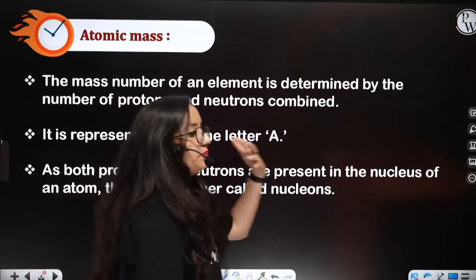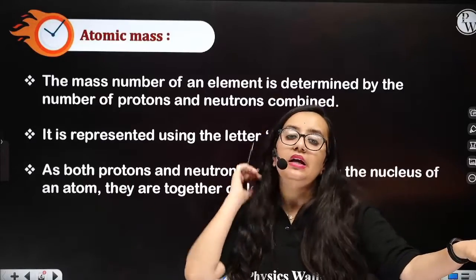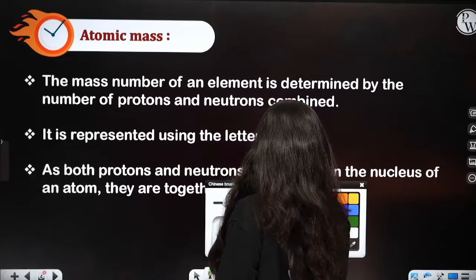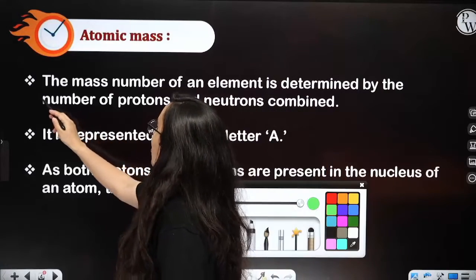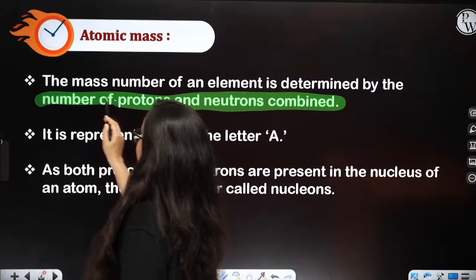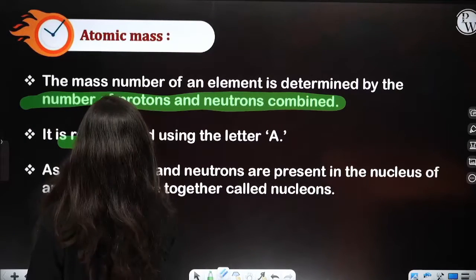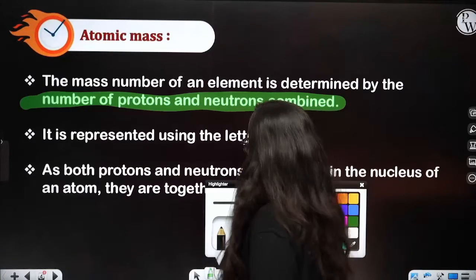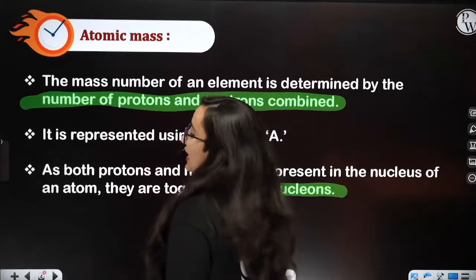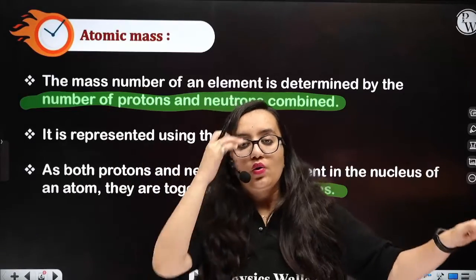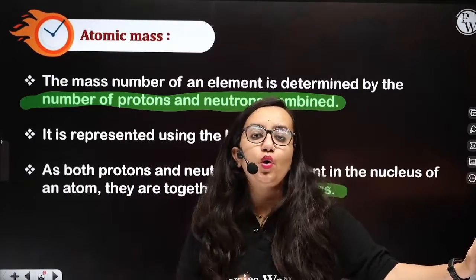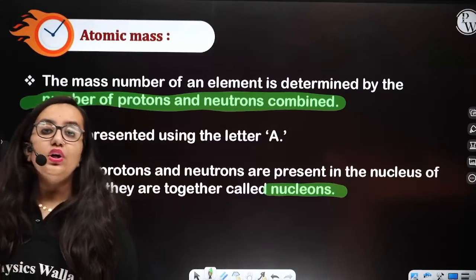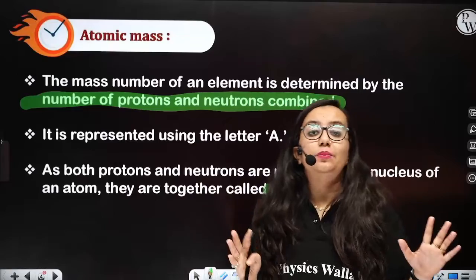Next is atomic mass. What is atomic mass? It is the combination of protons and neutrons. This term — protons and neutrons combined — is also known as nucleons, because they reside in the nucleus. If you add the number of protons and neutrons, you will get the number of nucleons, and that is your atomic mass.